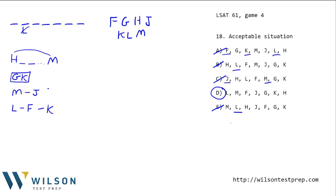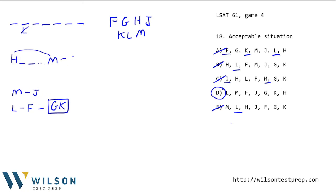Now let's combine some conditions. If F is before K and G is immediately before K, that tells me F is also before the GK block, because nothing gets between G and K. That's an easy rule combination we should note.